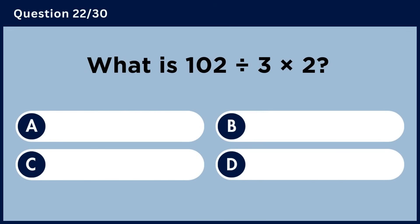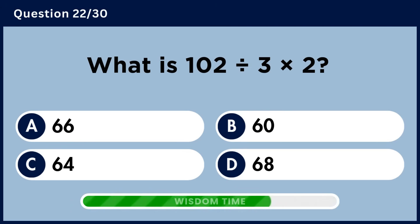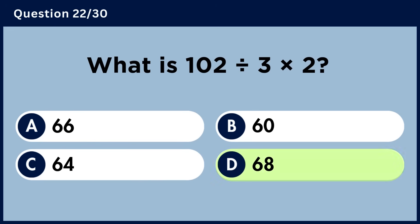What is 102 divided by 3 multiplied by 2? Answer D: 68.